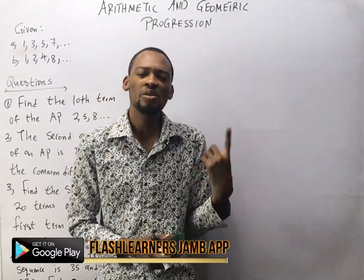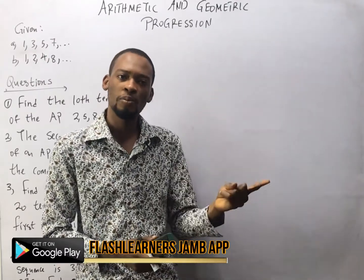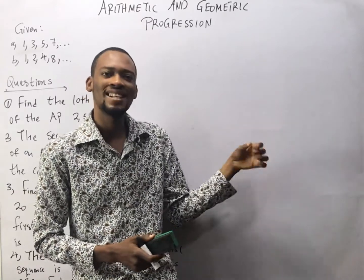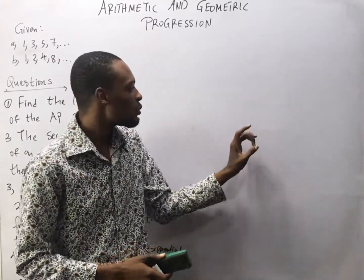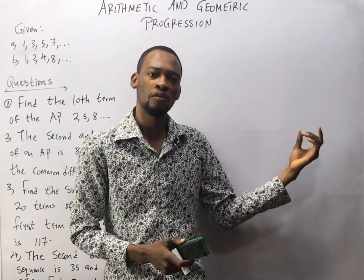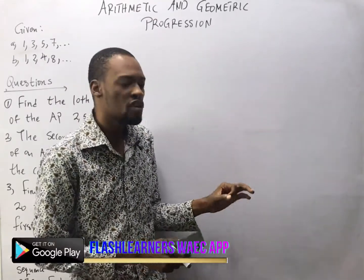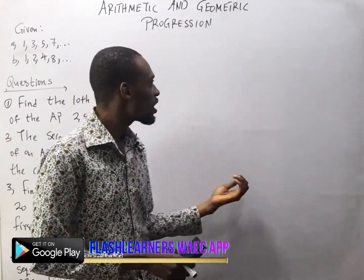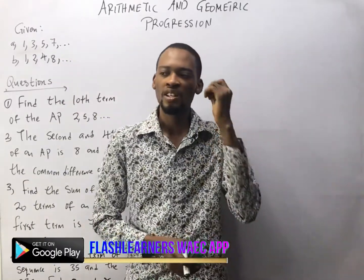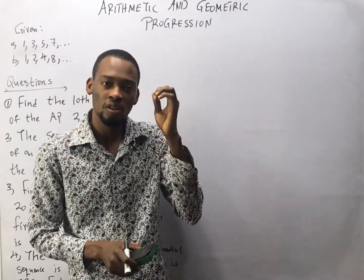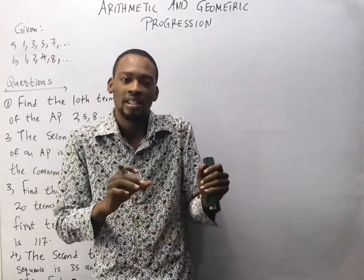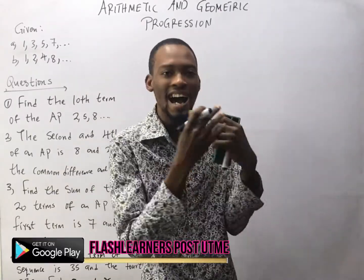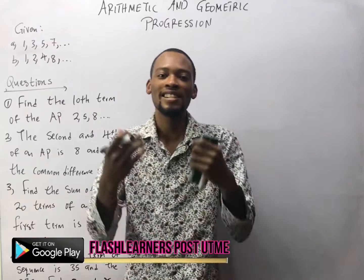One, you need to know as many formulas as possible because you won't always have time to derive them, except you are writing WAEC, for which I will derive some things. But for exams that are objective, you need to know formulas. The second thing you need to do well under AP and GP is wisdom. You need to use your head, think, and be relaxed. With that, you'll be fine.